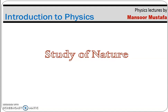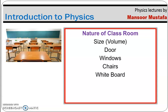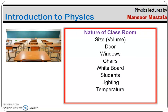Now, what is meant by nature — what are the things which we can study in nature? Consider the example of your classroom. If you are sitting in a classroom and you start observing things around you, you can see the size of your classroom, how many doors and windows there are, how many chairs, the whiteboard, the students, the teacher, the lighting, the temperature, and how much air is inside. All these things make the nature of your classroom.